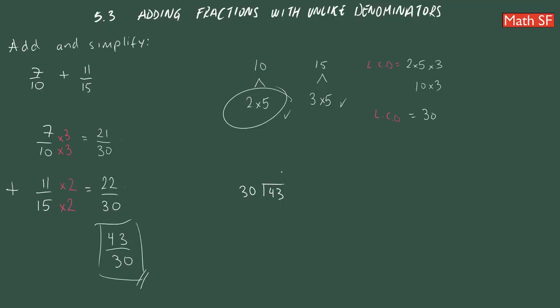So, 30 goes into 43 once. 1 times 30 is 30. Now, we are going to subtract. 3 minus 0 is 3. 4 minus 3 is 1. Therefore, our mixed numeral will be 1 and 13 over 30. So, either of these answers are still correct.